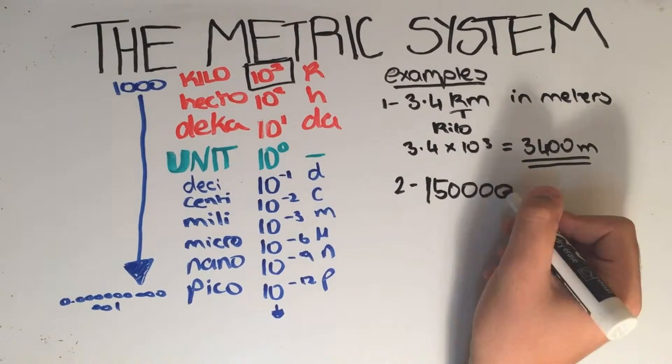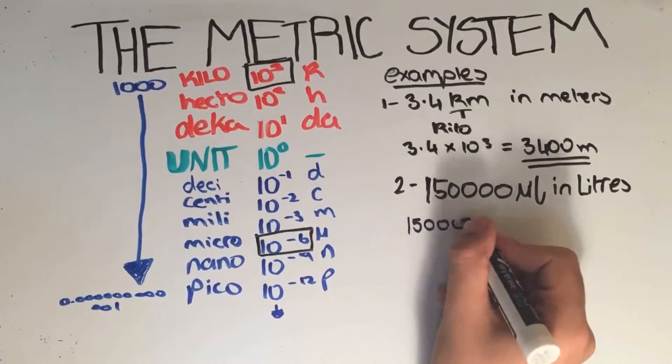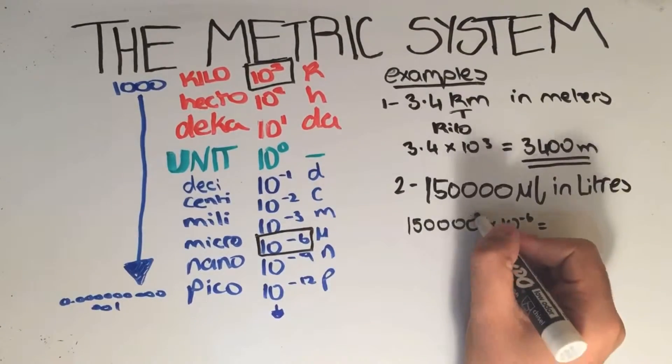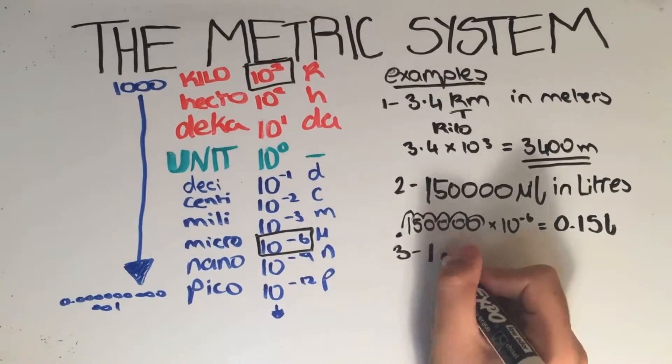The second example asks us to find 150,000 microliters in liters. Because micro is 10 to the power of minus 6, you move the decimal point six places to the left to get 0.15 liters.